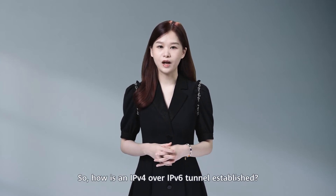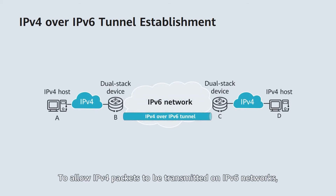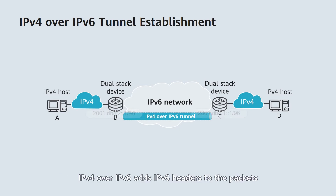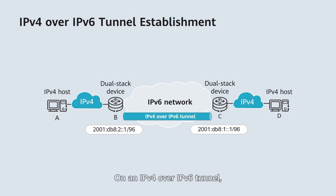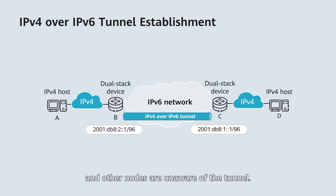So, how is an IPv4 over IPv6 tunnel established? To allow IPv4 packets to be transmitted on IPv6 networks, IPv4 over IPv6 adds IPv6 headers to the packets to encapsulate them into IPv6 packets. On an IPv4 over IPv6 tunnel, packets are processed on border nodes B and C, while other nodes on the network are unaware of the tunnel.